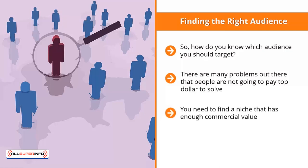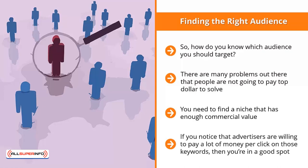You need to find a niche that has enough commercial value. One way to estimate this is to use Google AdWords Keyword Planner and do cost-per-click research on keywords related to your niche. If you notice that advertisers are willing to pay a lot of money per click on those keywords, then you are in a good spot. Chances are, there is enough commercial demand for that niche.